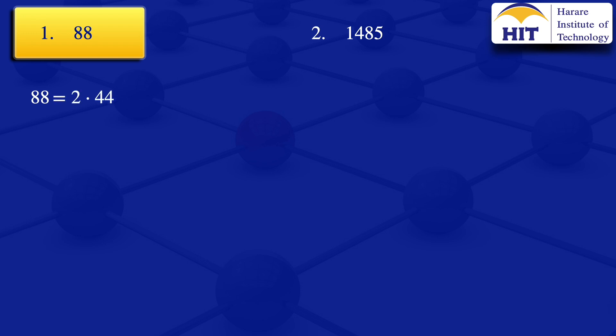We now look at 44 and check if the smallest prime, 2, is a factor. It is, so we write 44 as 2 × 22. Our expression becomes 2 × 2 × 22. We then check 22: the smallest prime 2 is a factor, so 22 = 2 × 11.